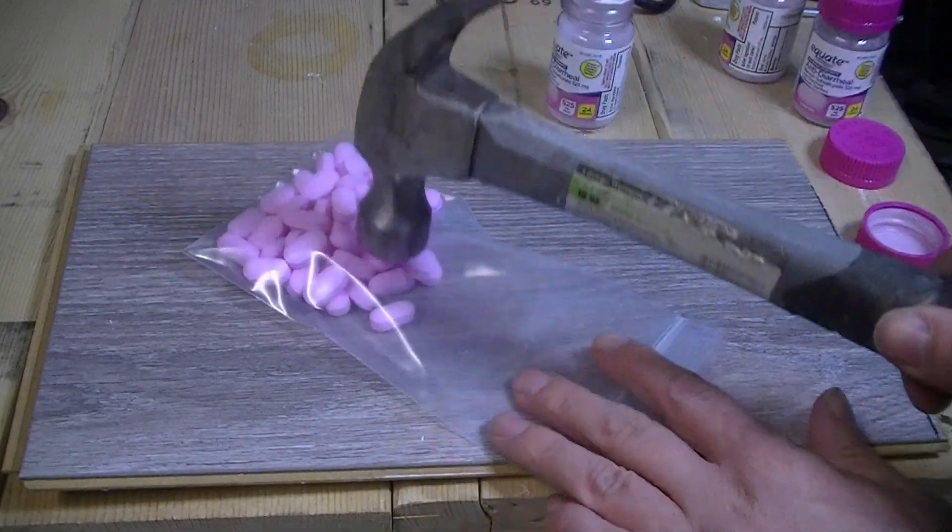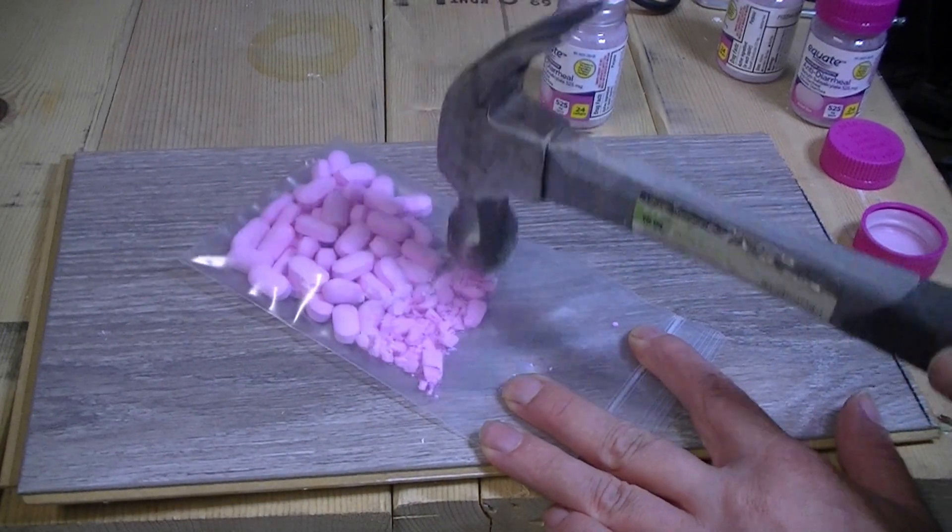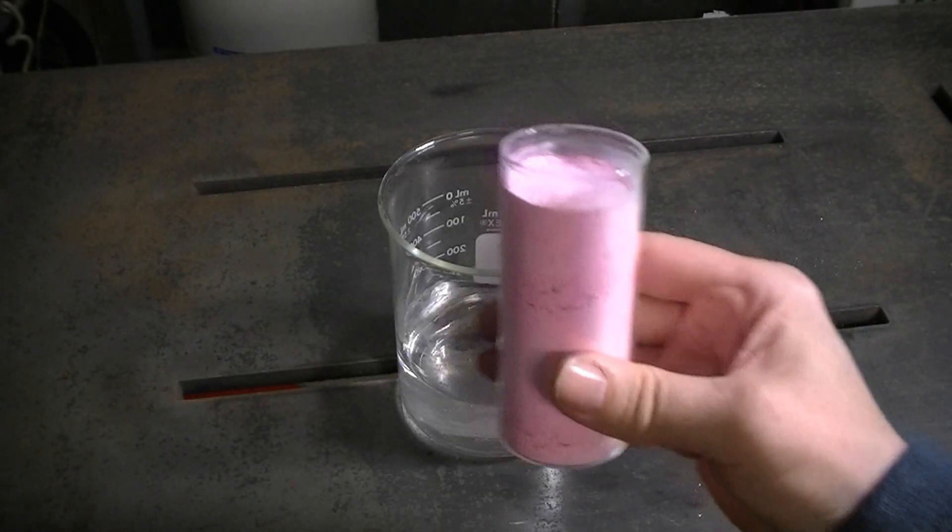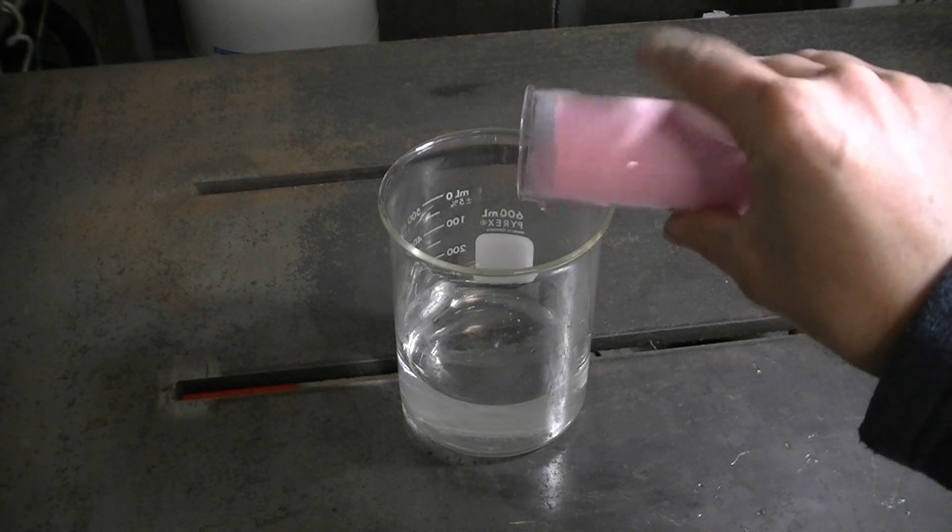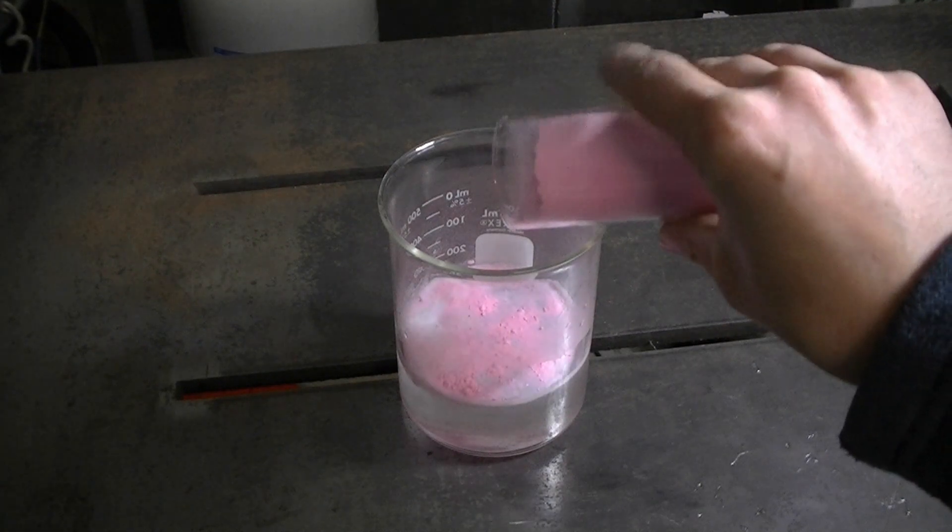So to start with, we break up our tablets to increase the surface area. We tap them with a hammer, this crushes them up. After we've crushed our tablets, the next stage is to add it to a beaker containing muriatic acid. This is basically hydrochloric acid. Muriatic acid is used to clean concrete and is commonly available.